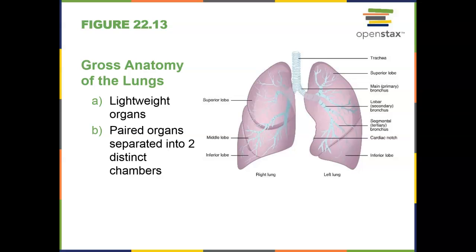The lungs are paired organs. They are super lightweight because they're filled with a bunch of sacs where gas exchange occurs. The lungs are one of our lightest organs — in fact, healthy lungs placed in water would float because of all the air in them.